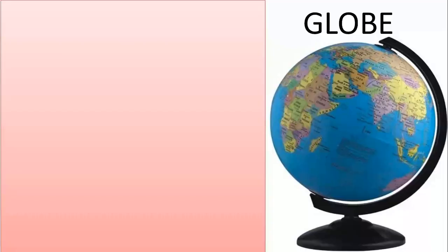In ancient times, people believed that the earth was flat and they would fall off from its surface if they travelled too long, so they avoided travelling so far. In the modern era, satellite images of the earth proved that the shape of earth is like an orange. We can comprehend the shape of the earth with the help of a globe, and here in this picture you can see the globe.